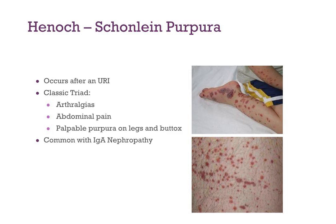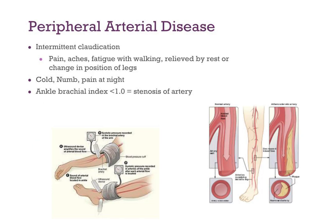Henoch-Schönlein Purpura (HSP) — someone has an upper respiratory tract infection, then around a week later presents with the classic triad: arthralgias, abdominal pain, and palpable purpura on the legs and buttocks. This is common because it's associated with IgA nephropathy. You must know this to diagnose it.